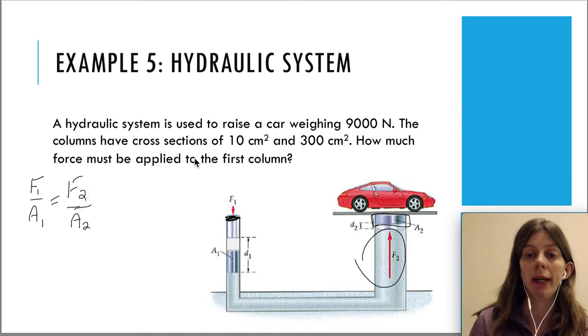What about the units for the area here? We have A1 is equal to 10 cm squared and we have A2 is equal to 300 cm squared. Do we need to convert the cm squared to the standard unit of m squared? It turns out that we don't.